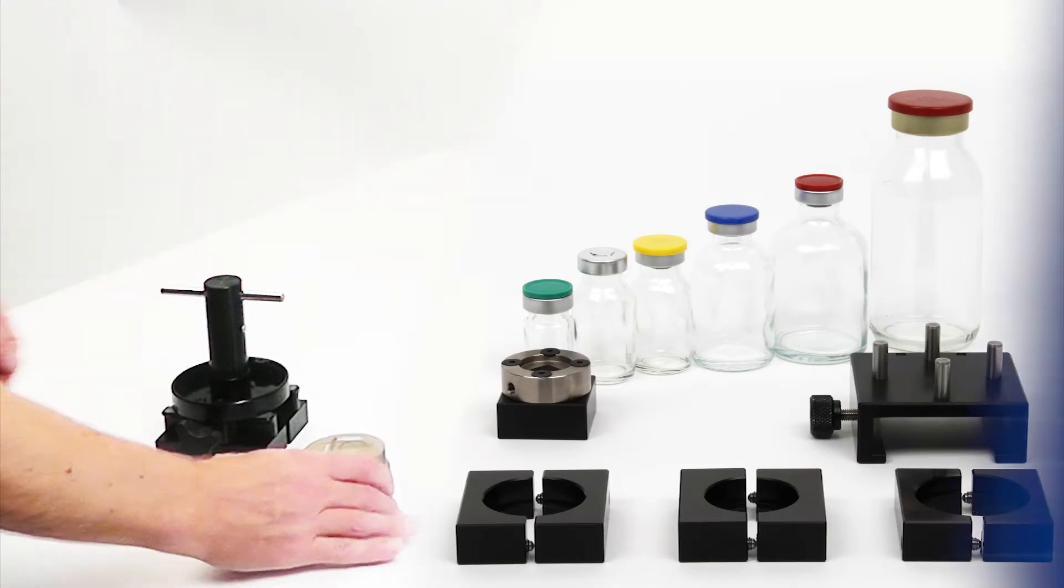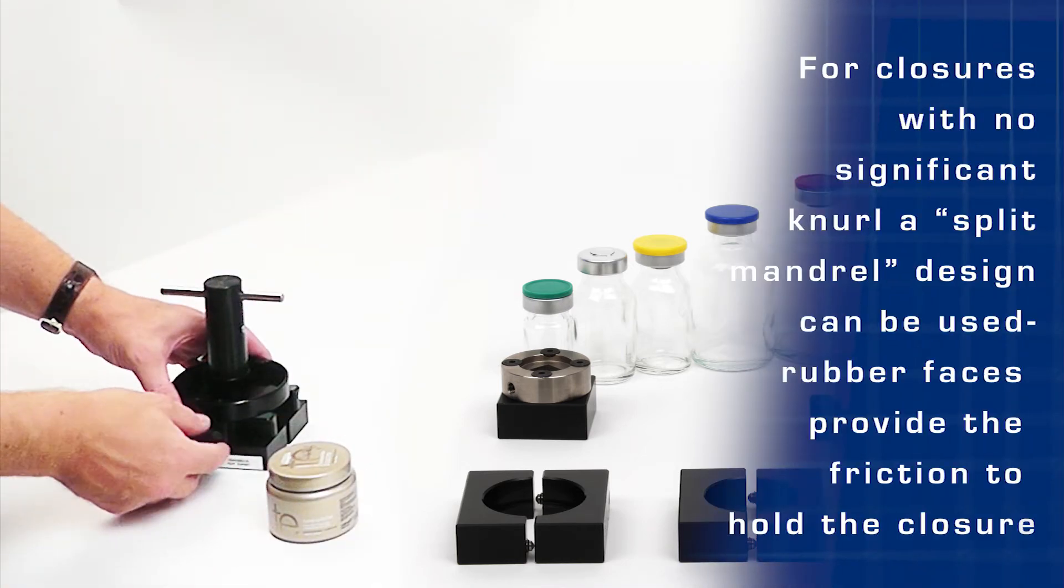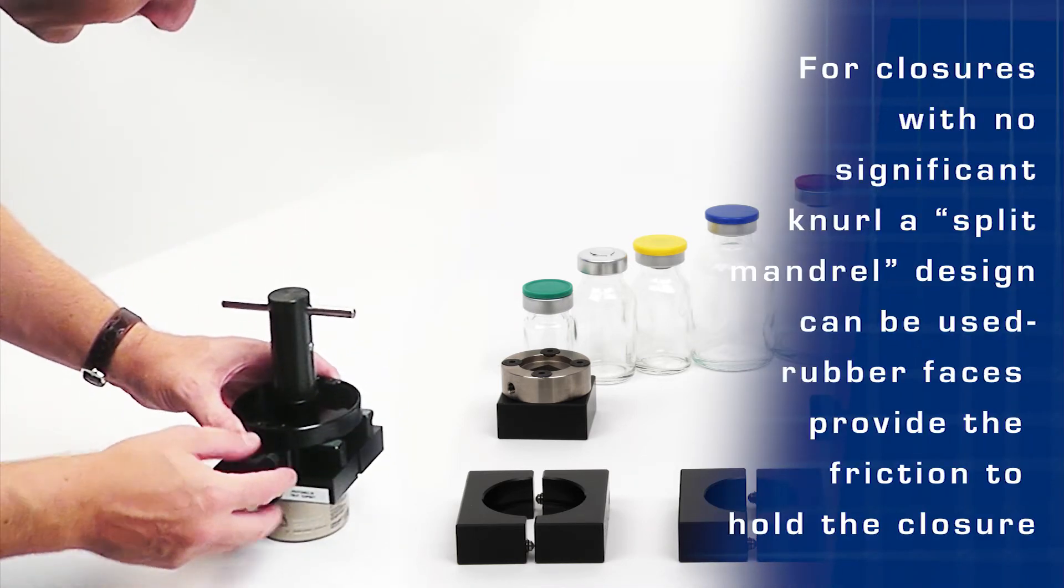For closures without significant knurl, a split mandrel design can be used. Here, rubber faces provide the friction to hold the closure.